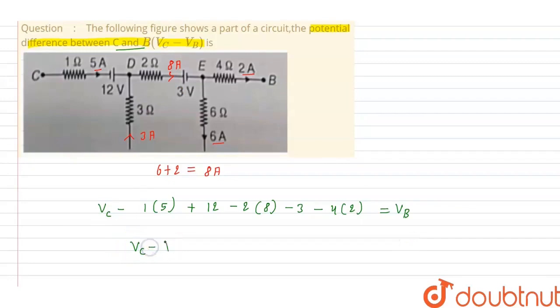So Vc minus Vb is equal to 5 minus 12 plus 16 plus 3 plus 8. After solving this we get 20 volt. This is the answer. Potential difference between C and B, Vc minus Vb is 20 volt.